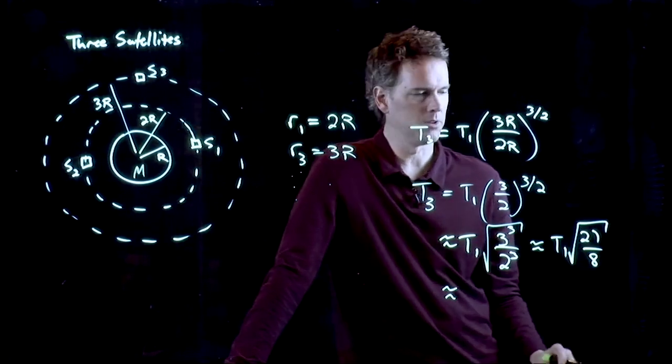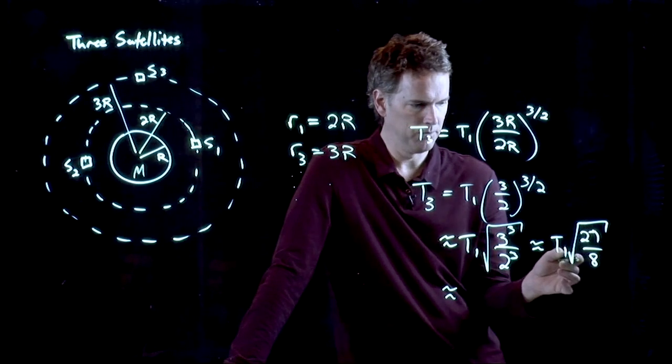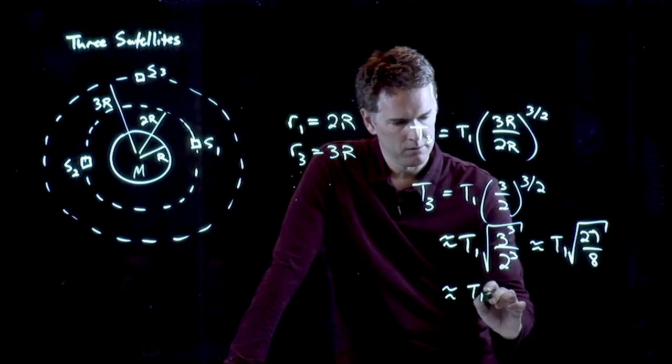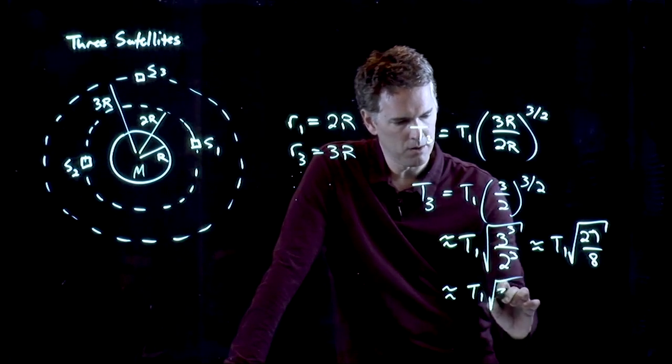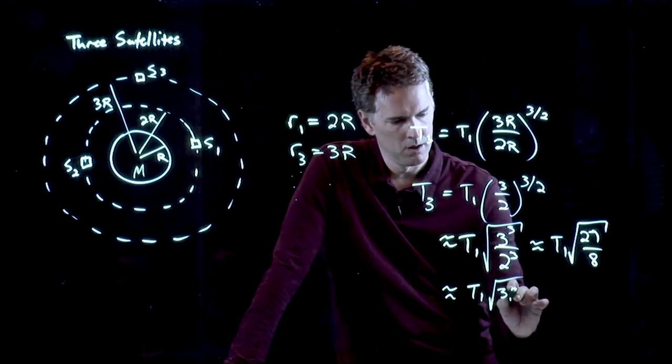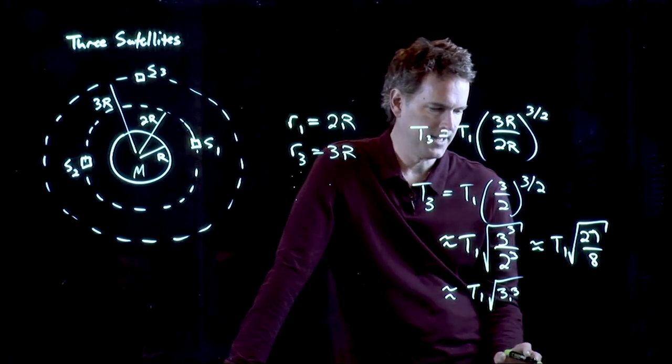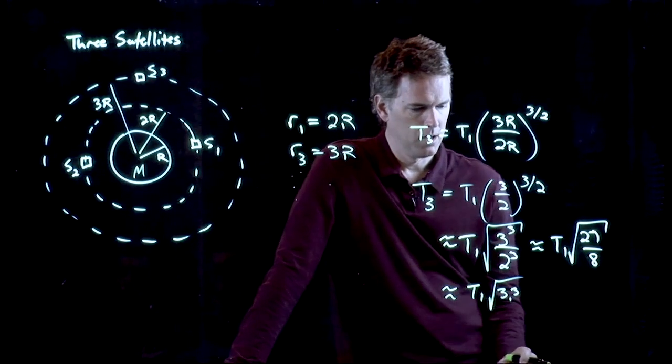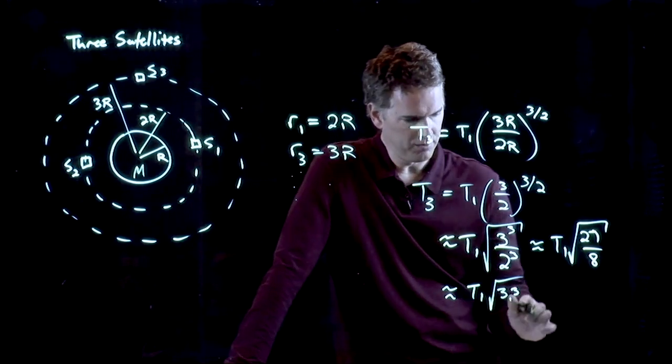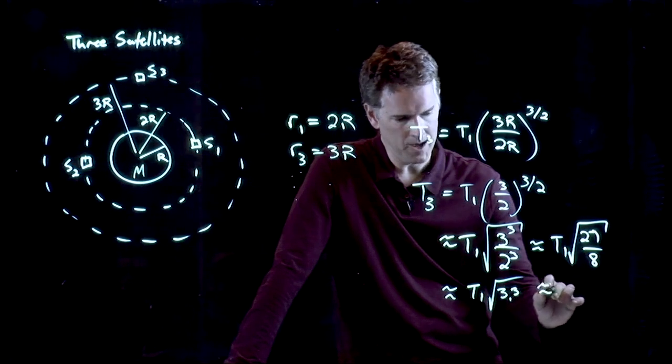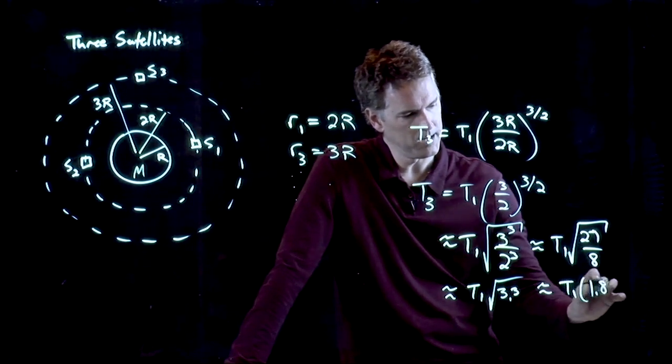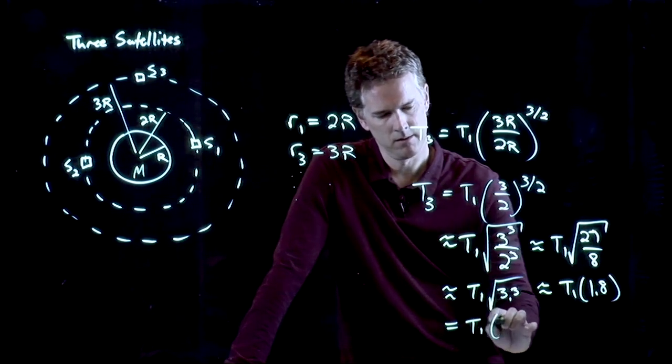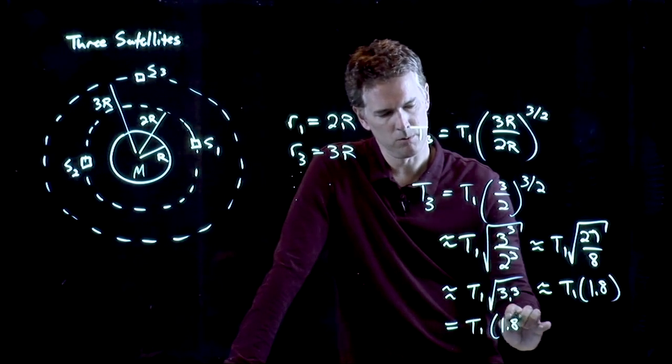What is 27 over 8? Well, 8 goes into 24 three times, and then I need another 3 eighths on top of that. So that is about 3.3. And if I take the square root of 3.3, what do I get? Well, square root of 3 is 1.6, so it's got to be a little bit bigger than that. So we'll say 1.8. And what was the exact answer that you had? 1.837. 1.837.